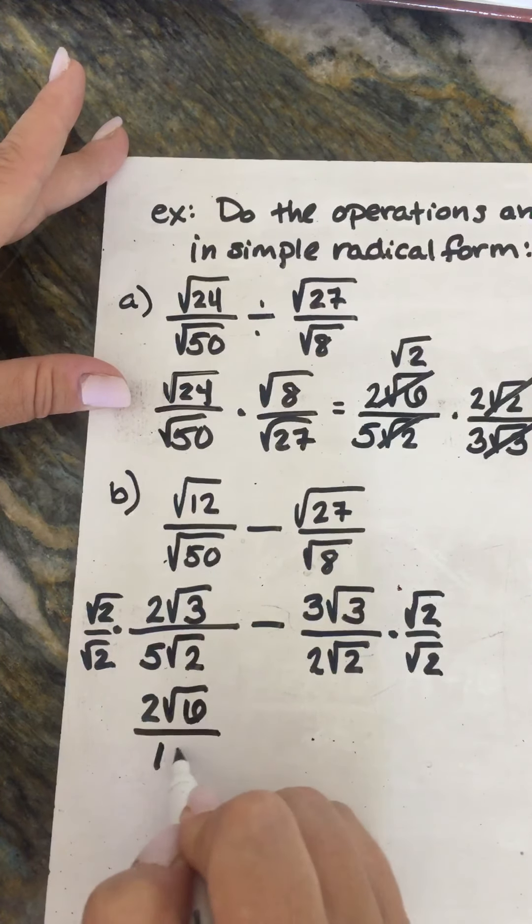This gives us 2 square root of 6 over 10 minus 3 square root of 6 over 4. Now we're in a better position to do the subtraction — like math we did back in fourth grade.